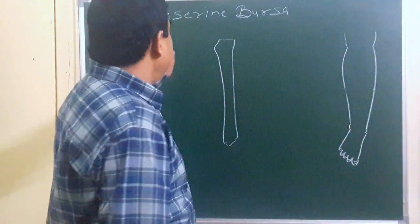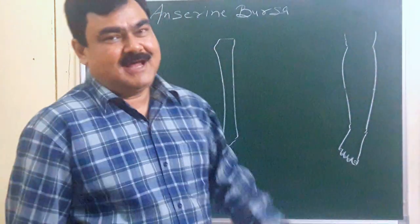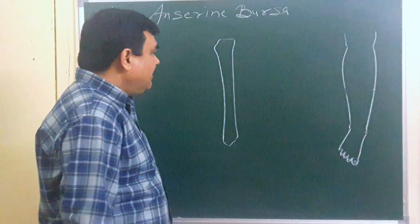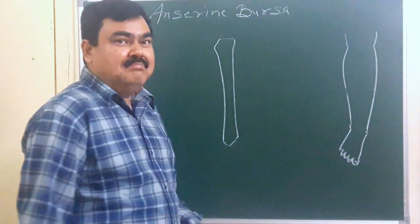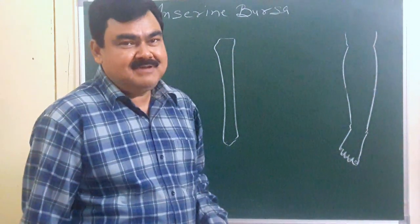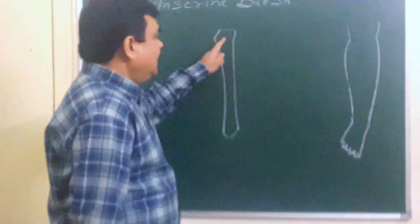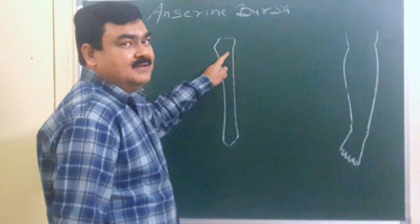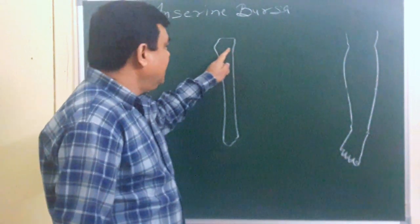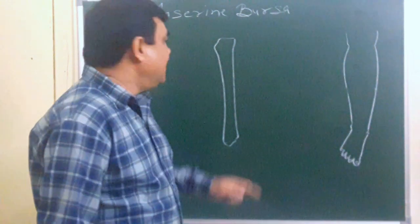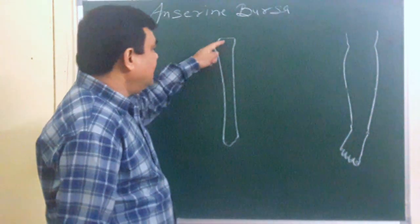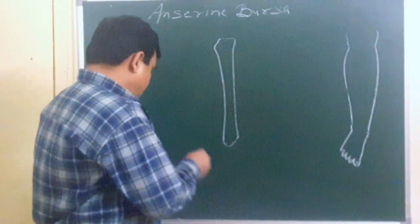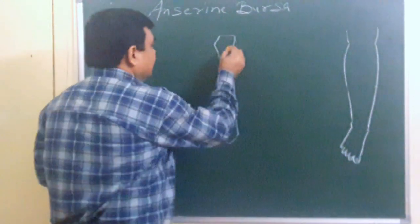We will discuss the Anserine Bursa, which is present on the upper part of the medial side of the leg. Here is the tibia — this is the medial side of the tibia. This part is the condyle of the tibia, and this is the shaft of the tibia.